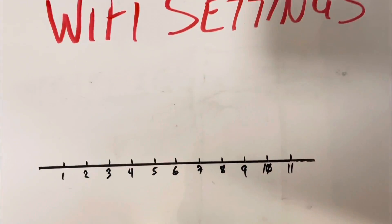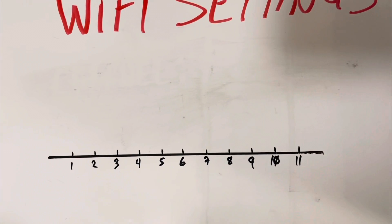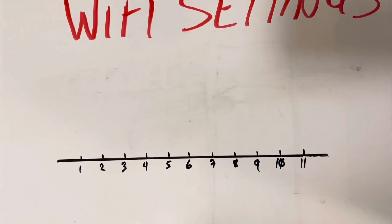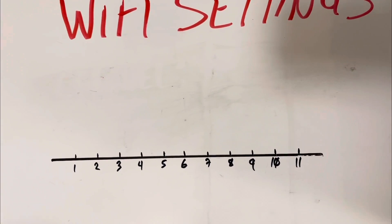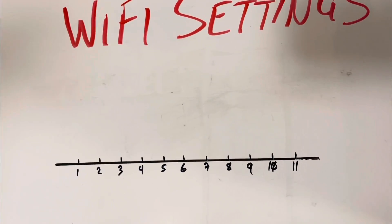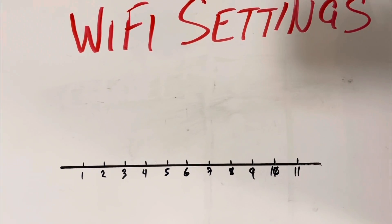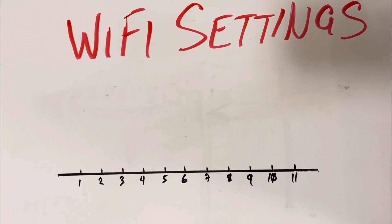Every Wi-Fi network is assigned a channel. They're all different bandwidths and they take up a certain amount of space in the airwaves. This whole channel system is designed to allow you to have multiple routers in a given area and not have them interfere with each other.